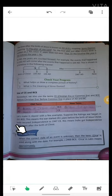India secured independence in 1947 CE. This means India got independence 1947 years after the birth of Christ.